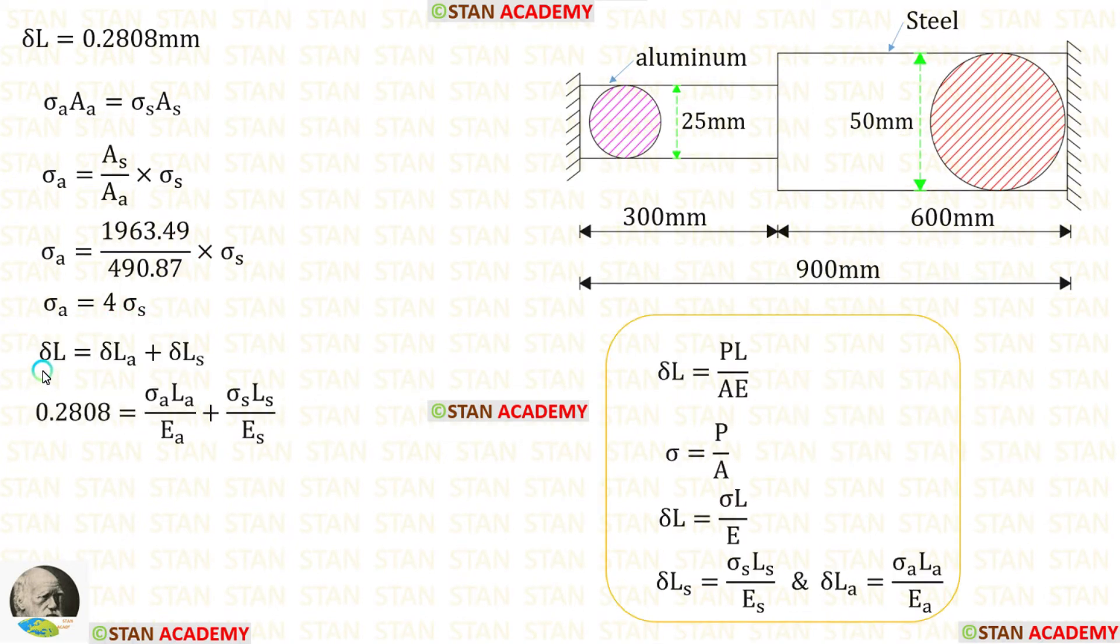We know that delta L is equal to delta L_A plus delta L_S. Just before we have calculated delta L. Also we know that delta L is equal to P L upon A E. P upon A is the stress sigma. For P upon A, we can write sigma. Using this formula, we can write delta L_A and delta L_S like this.